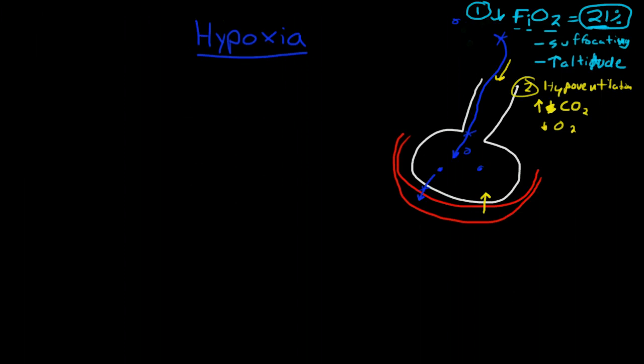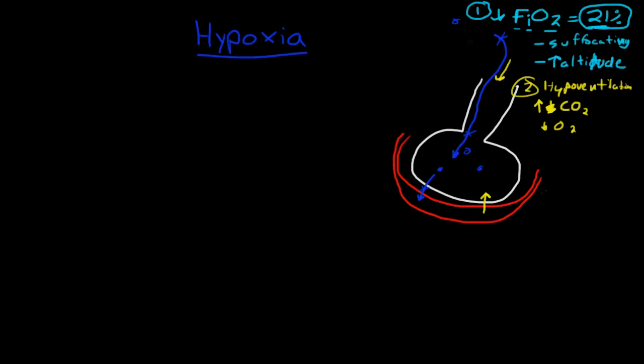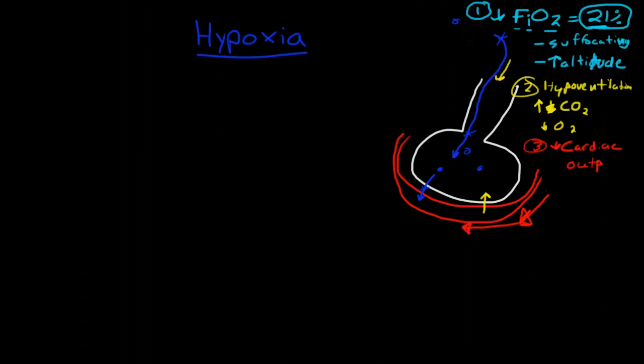The third thing that could happen is that there is just decreased blood flow past the alveoli. And if you decrease blood flow past the alveoli, there is less blood to exchange oxygen at the alveolar level. So you could have decreased cardiac output. And this usually has to be fairly extreme because there is such a large reserve in the lungs. So you'd really have to get your cardiac output down to about half normal.